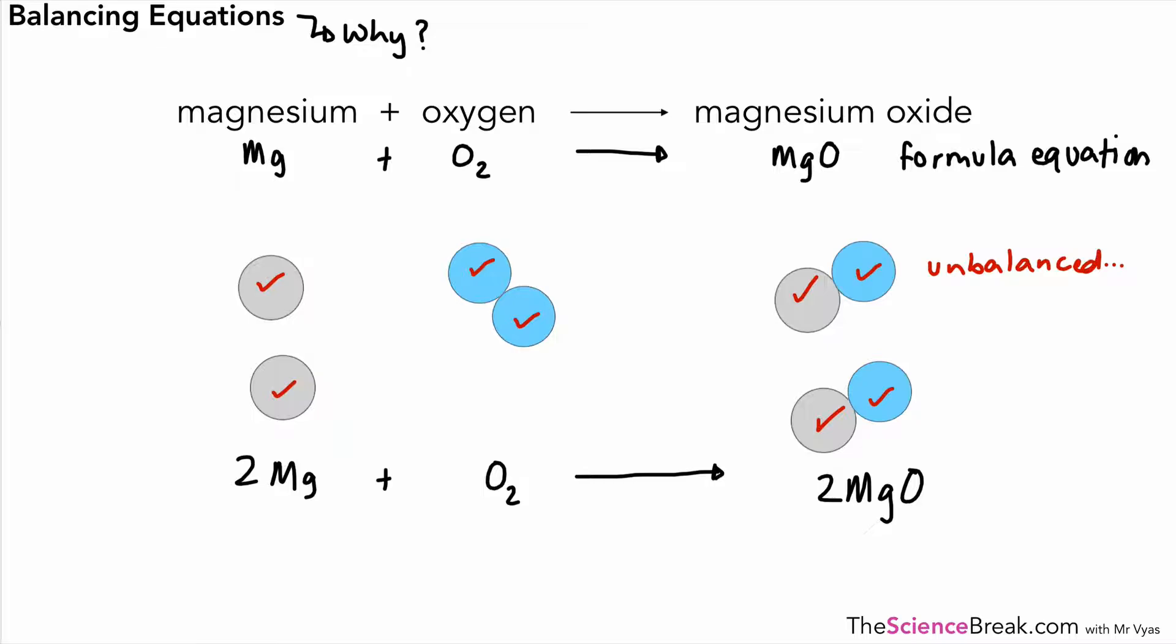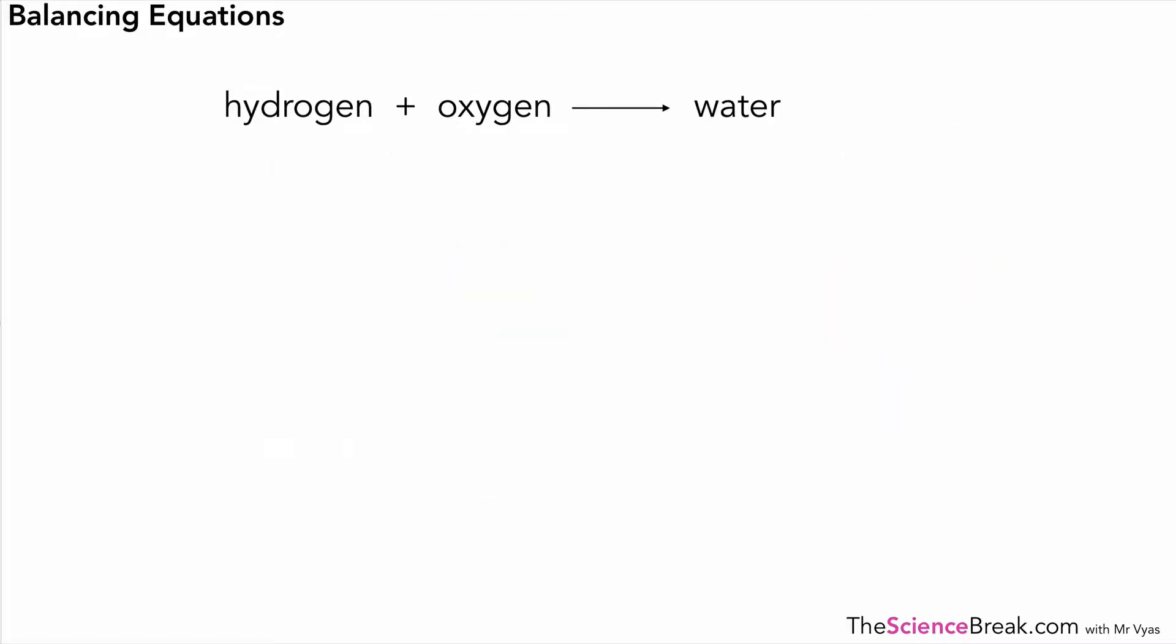Okay so let's have a practice at some ourselves. Now we've got hydrogen and oxygen reacting to make water. We don't actually have to draw the atoms out every time. What we can do is use a method that I'm about to show you. So hydrogen is H2, that's how it exists. Oxygen exists as O2, and water is as you probably know H2O. So what we do is we draw a line where the arrow is to show the right hand side and the left hand side. On the left hand side we list the atoms. So we've got hydrogen and we've got oxygen. On the right hand side we should have the same and yes we've got hydrogen and we've got oxygen.